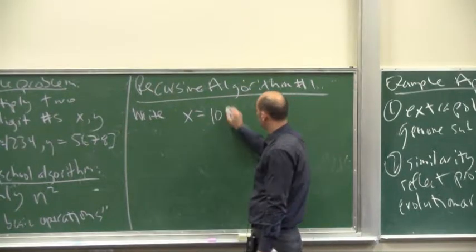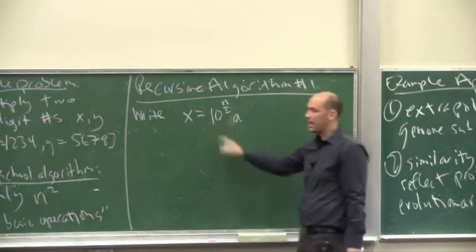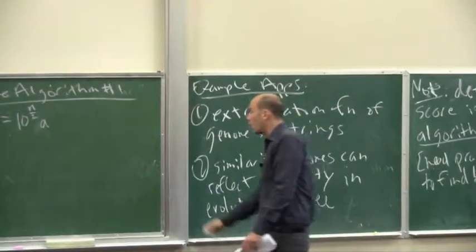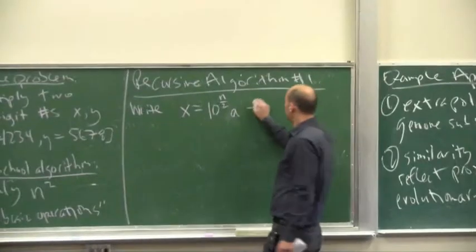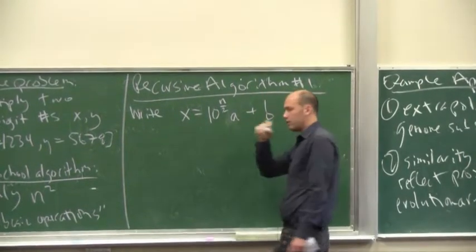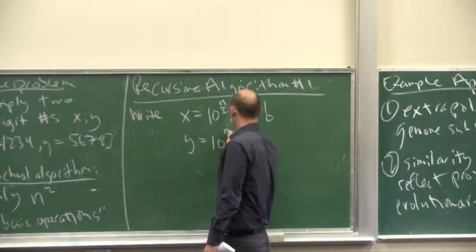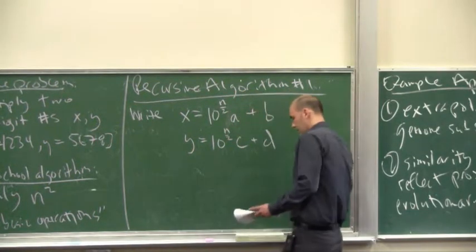So, this would be like 12. A would be 12 times 100 to get us to the 1200 plus B, in that case, would be 34. Same thing with Y.